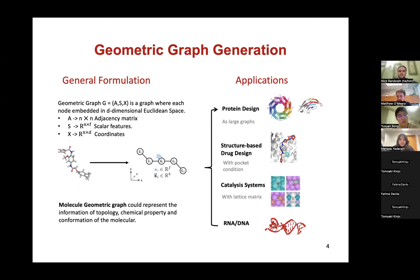You could also use different ways to express the conformation, like torsional angles. But we focus on this formulation. Using geometric graphs, we can represent several important properties like topology, chemical properties, and conformation of 3D molecules.